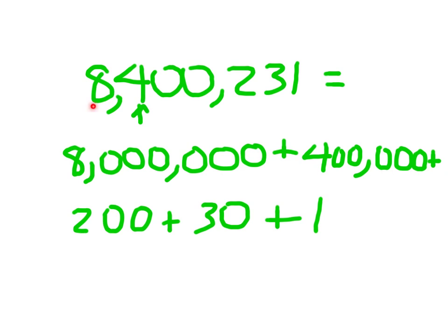For each of those place values where the digit is bigger than 0, we must have an addend. There are 5 digits bigger than 0, so we should have 5 addends — that's a good check for yourself. Good mathematicians will check: 8,000,000 — correct; 400,000 — correct; that 2 worth 200 — correct; 3 worth 30 — correct; 1 — correct. Five addends.